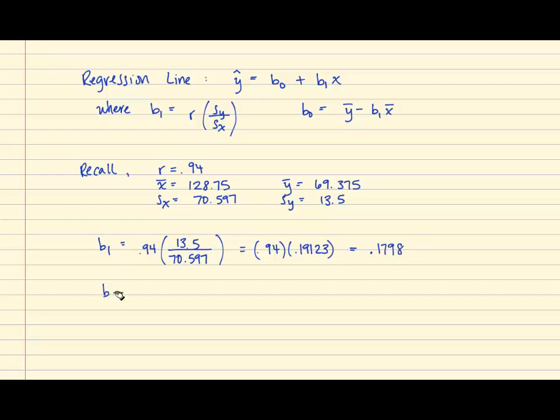And now we can find b0, which is the y-intercept. And so we'll have 69.375 minus b1, which we just found, of .1798 times 128.75. Using correct order of operations, we're going to multiply first, and so that gives us 23.149. And once we subtract, b0 is equal to 46.2.